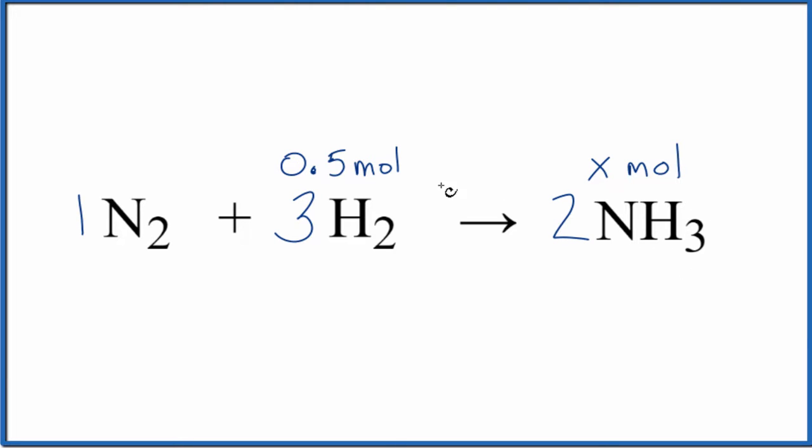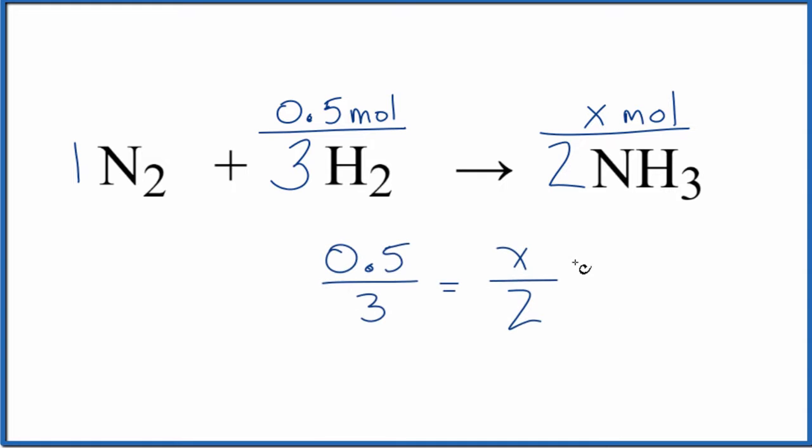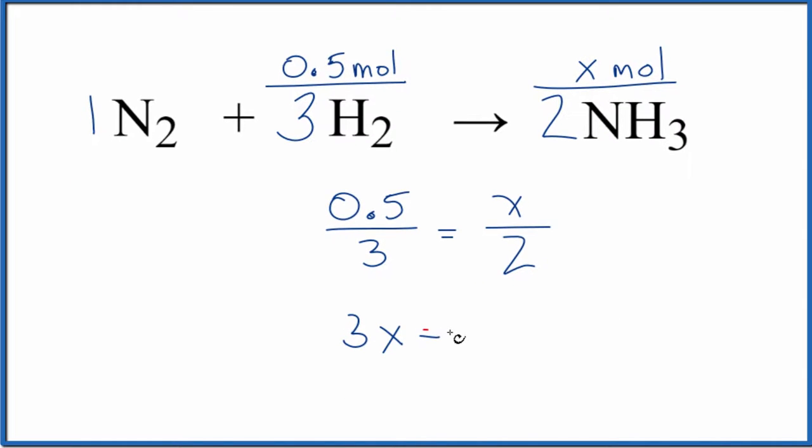We can use the mole ratio. One way to think about it is we have 0.5 is to three as X is to two. We can just set this up as a ratio. Then we cross multiply. We get three times X, three X equals 0.5 times two. That's just one. So X equals one over three, or we could say 0.33.